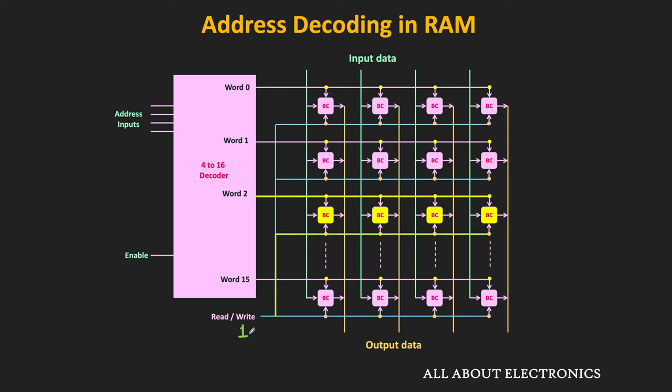Each binary cell in the second word will put the data on the output line. Similarly, to write data to the same word, a 0 is applied to the control line. As soon as the write signal is applied, the RAM accepts the input data and each binary cell in the second word stores the corresponding data available on the input line.